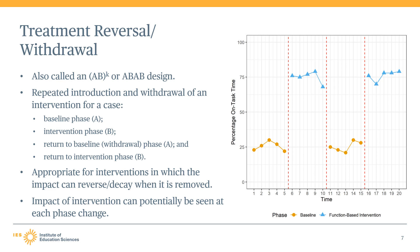Because this design involves the repeated application and then withdrawal of treatment, it is only appropriate when the intervention effect can reverse or decay after it is withdrawn. This is sometimes referred to as an outcome or intervention being reversible. In version 5.0 of the handbook, the WWC has added a step to assess the presence or absence of reversibility for findings that are potentially eligible to receive a research rating of meets WWC standards without reservations, which we will discuss later in this module.